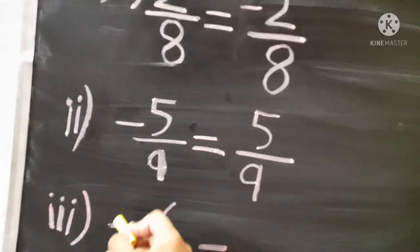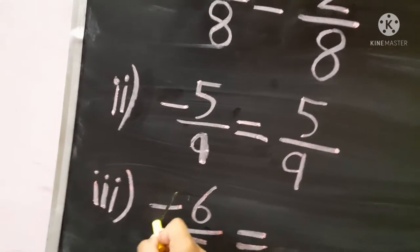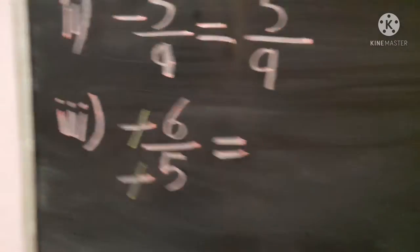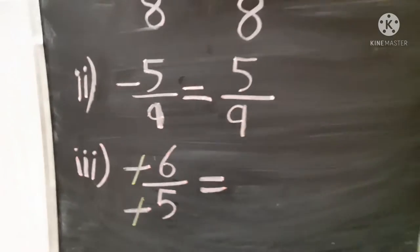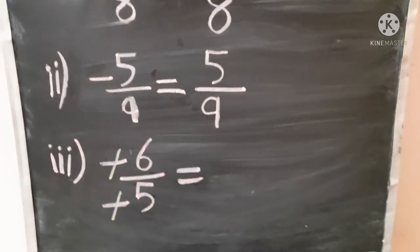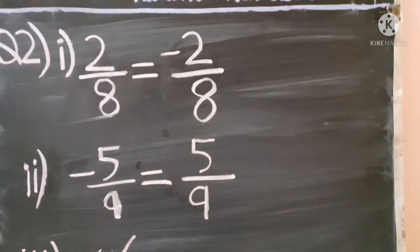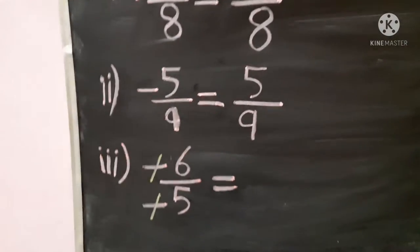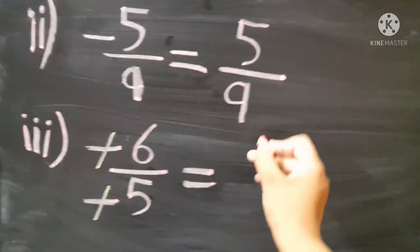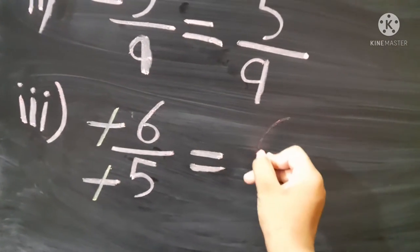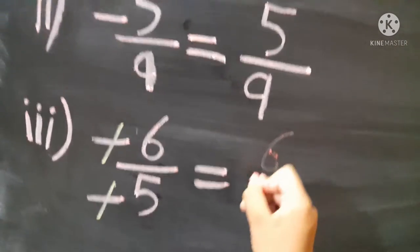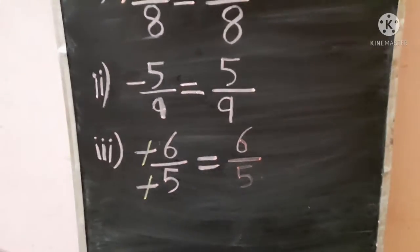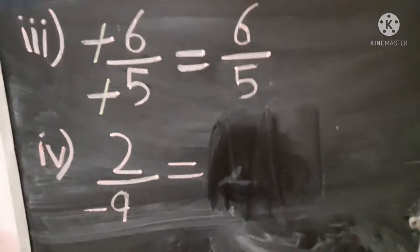So minus 6 upon minus 5: the minus signs cancel each other and the answer will now be positive 6 upon 5.